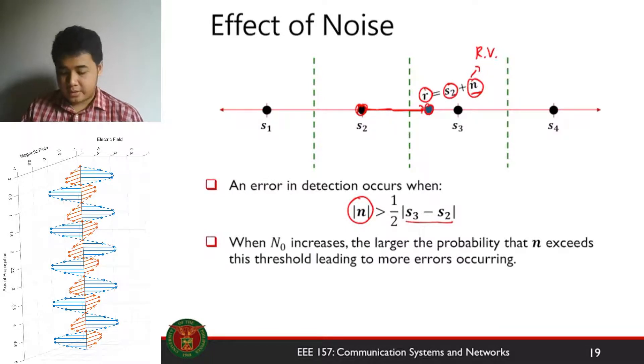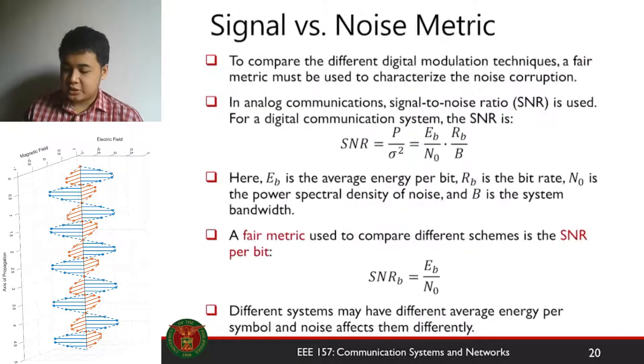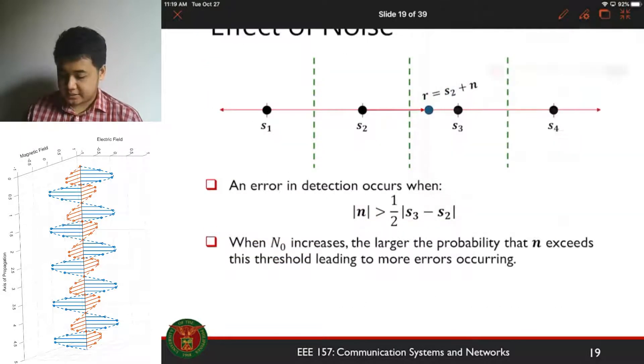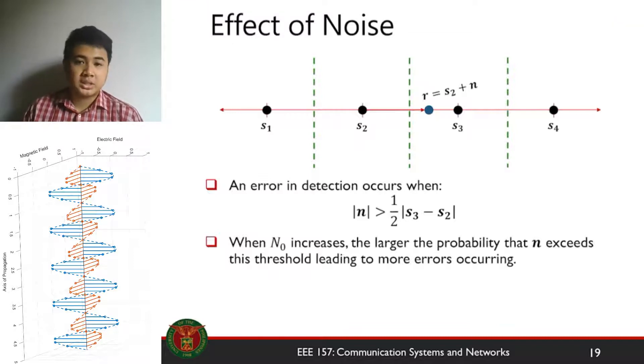Now, we can use the constellation map again to visualize how an additive white Gaussian noise corrupts your digital transmission. So in this case for a one-dimensional signal like PAM, we can just overlay a Gaussian distribution over S2. And the area here corresponds to the probability of error when S2 is transmitted.